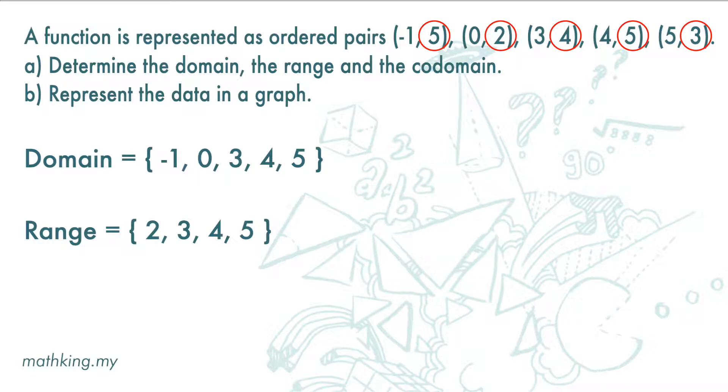As for codomain, since we do not have additional data, we just set codomain as equal to the range.